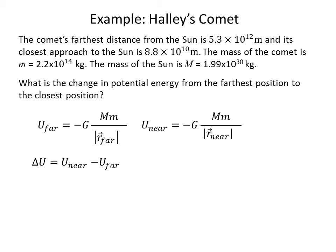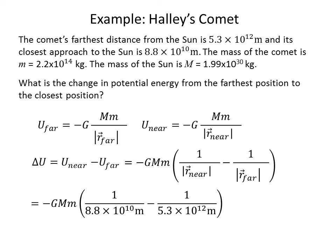The change in potential energy is equal to U near minus U far, which, if we plug in the formula, we have minus G times the capital M times little m times the quantity of 1 over r near minus 1 over r far. Plugging in the numbers, we find that delta U is equal to minus 3.3 times 10 to the 23rd joules.